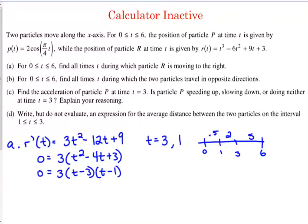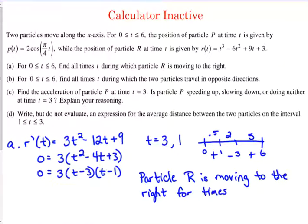Plugging this into my velocity function in the factored form, we're just looking for the sign here. So we've got positive 3 times, when we plug in 0.5, that first factor is negative, the second factor is negative. So positive times negative times negative is positive. Plug in 2, positive times a negative times a positive, so it's negative. And then when we plug in 5, positive, positive, positive. So it's positive.